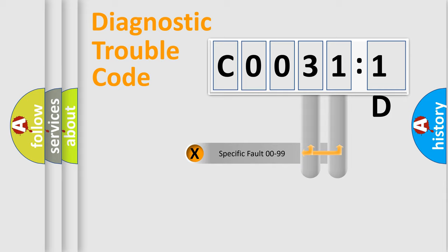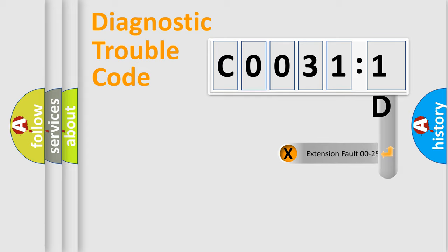Only the last two characters define the specific fault of the group. The add-on to the error code serves to specify the status in more detail, for example, short to ground.